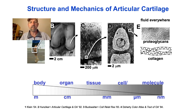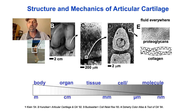Welcome back to Biomechanics. Today we will discuss the structure and mechanics of articular cartilage as well as some of the changes that occur in diseases of the joints. As with all tissues, understanding the biomechanics of cartilage requires a knowledge of the molecular, cellular, and extracellular organization of the tissue across a large range of physical scales from nanometers to meters.